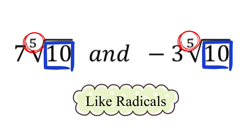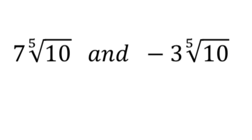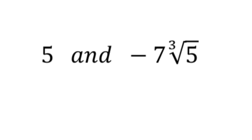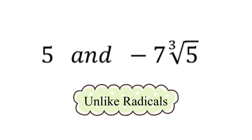Now let's move on to the next example. We have a 5 and negative 7 times the cube root of 5. The number 5 is a whole number while the other is a radical expression, so we can say that these two are unlike radicals.